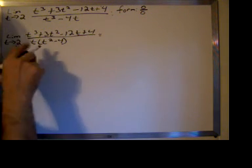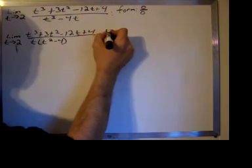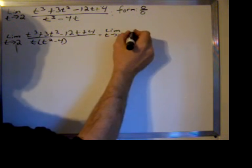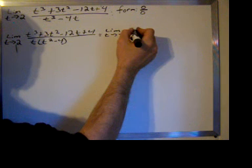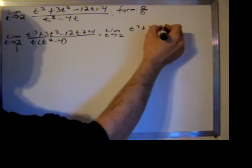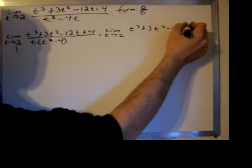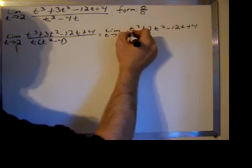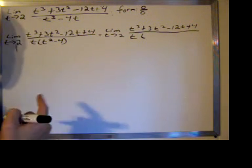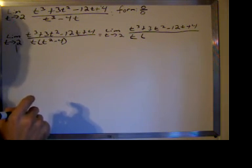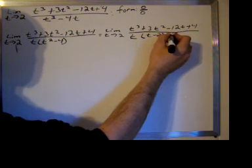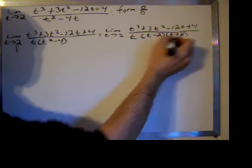Factoring the denominator once again. There's a reason why I'm factoring this denominator first like this, rather than tackling the top. You'll see in a second. So we still have t cubed plus 3t squared minus 12t plus 4 on the numerator. We have t and then t squared minus 4. Hopefully you recognize that's a difference of perfect squares and factors into t minus 2 times t plus 2.